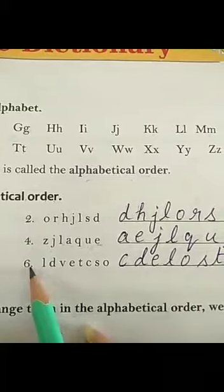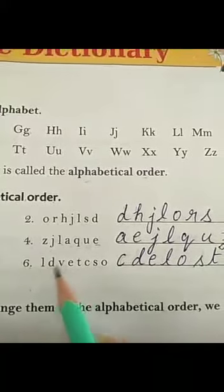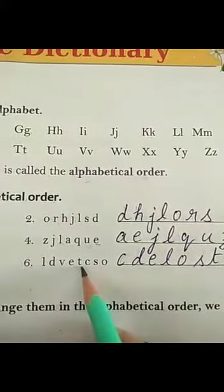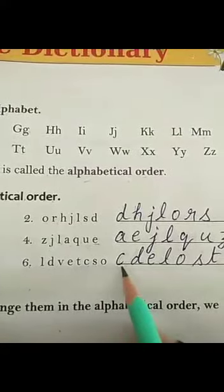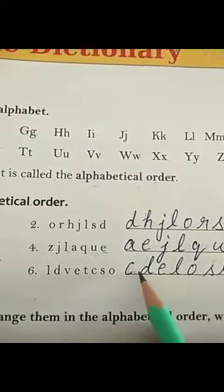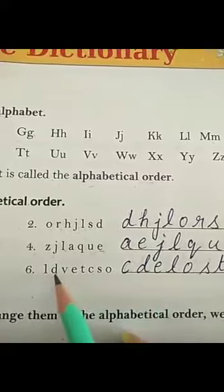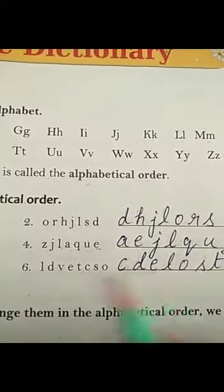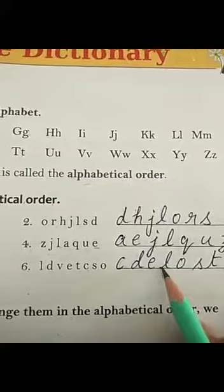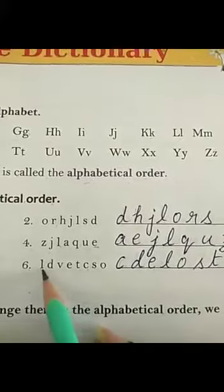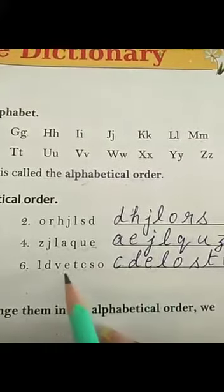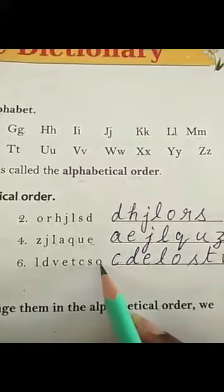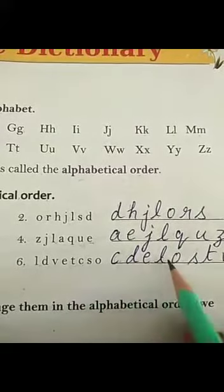Question number six. Now in this, A — we don't have A. B is also not here. And C — yes, C is present here. So we will write C. And after that, in alphabetical order D comes. Yes, we have D here. So we will write D. E is also here. So we will write D, E. And after that, L. We will write L. And M and N are not present here. Yes, O — we have O. So we will write O.